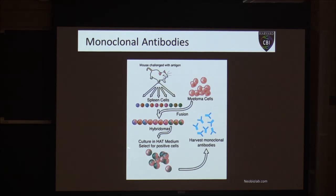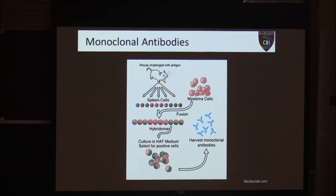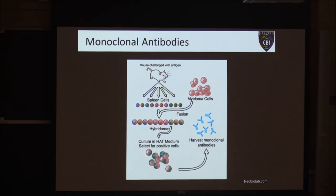We use HAT medium to select for the fused cells, then titer these down into single-cell colonies and grow them in 96-well plates, testing the antibodies produced by each B cell clone to find which well produces antibodies to our original antigen — for example using an ELISA assay. We then have a cell line of hybridomas that can be cultured for a long period of time, always producing the exact same antibody.